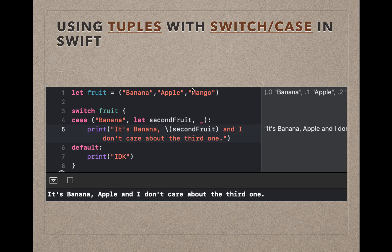In the next example we use an underscore in place of the third item in the tuple, which lets us select only the first two elements and ignore the third. We access the second fruit just like before, and we don't care what the third one is — it could be mango, potato, anything — it doesn't matter.